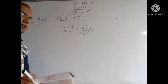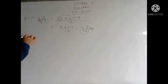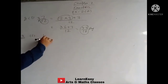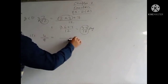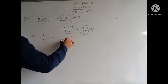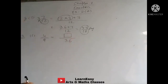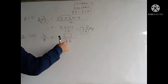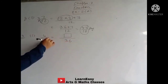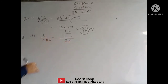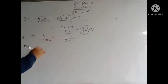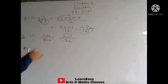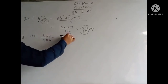Question number 3: Fill in the blanks. First part: 4 upon 9 equals dash upon 36. We observe that the denominator on the left is 9 and on the right is 36. Since 9 multiplied by 4 equals 36, we are multiplying by 4. So in the numerator also, we multiply by 4. Therefore, 4 multiplied by 4 is 16. Answer: 4 upon 9 equals 16 upon 36.